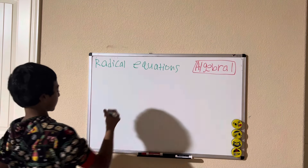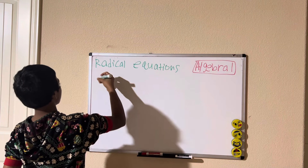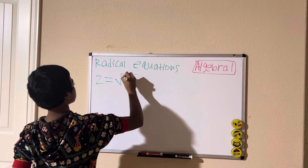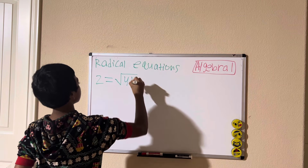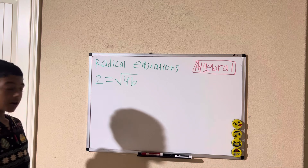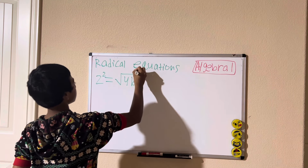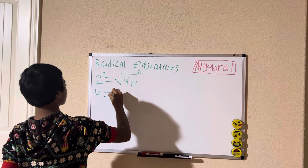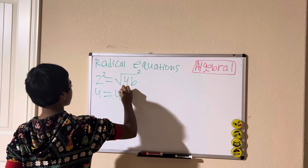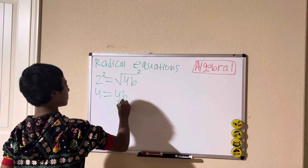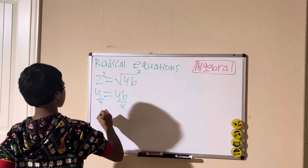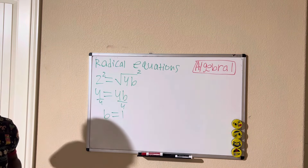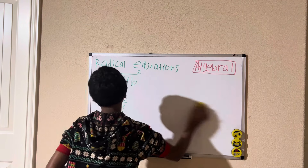Let me give you some more examples. We have 2 equals the square root of 4b. To start, I'm going to square both sides of the equation, giving us 4 equals 4b. Now I'm going to divide both sides by 4, giving us b equals 1. And that is our solution for number 3.